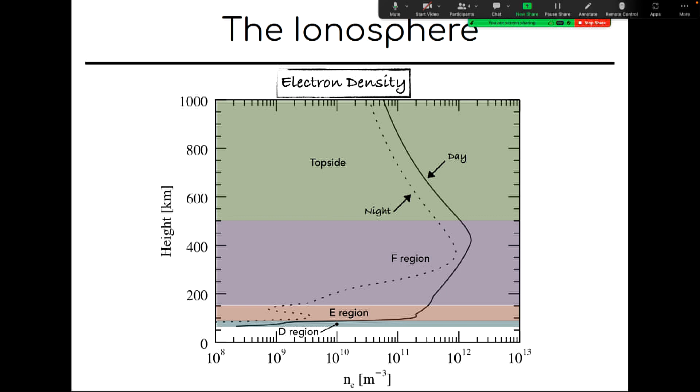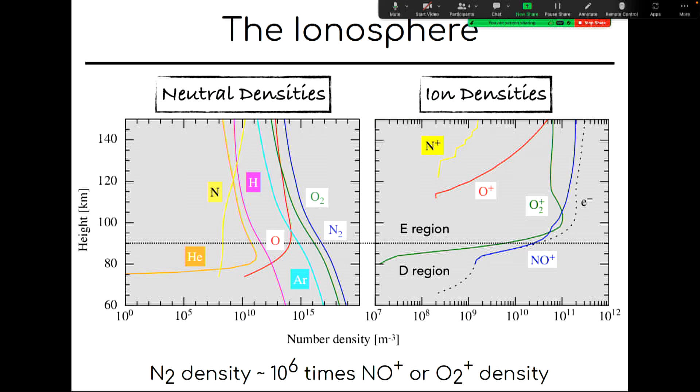And then if we talk in terms of what makes up the ions and the neutral particles, around 90 or 100 kilometers, the base of the interface between the D and the E region, it's mostly N2 molecules and NO plus ions. There are also O2 plus ions, but those two basically have the same mass. But one thing I want to point out here is that the N2 density is about a million times that of NO plus or O2 plus. And so that's going to become really important in terms of the relevant physics.